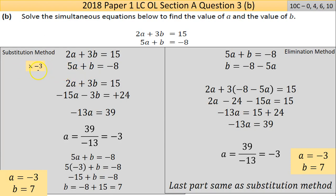So I've done that by multiplying by negative 3. So the top equation stays the same, so it's not changed here. But the second equation, I'm multiplying all the terms in that equation by negative 3. So 5 times a by negative 3 is negative 15a. B by negative 3 is negative 3b. And negative 8 by negative 3 is positive 24.